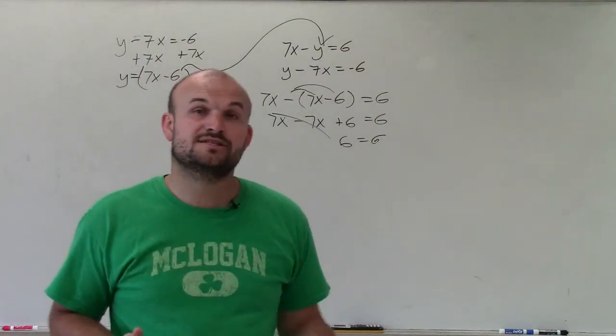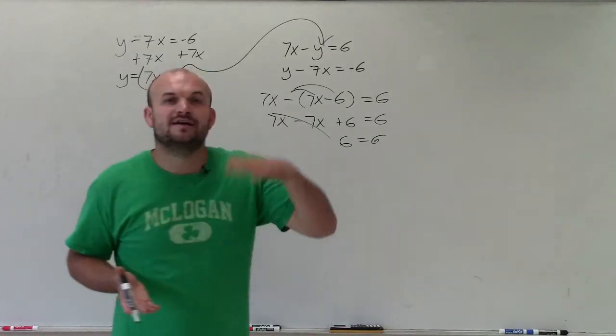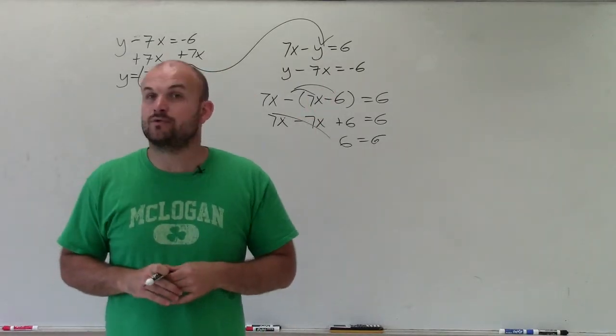So therefore, we have a consistent solution that is dependent. This is infinitely many solutions. If you looked at the graph, these would be lines that are right on top of each other.